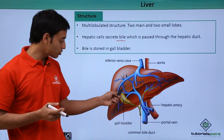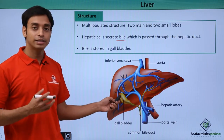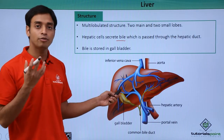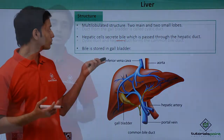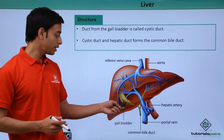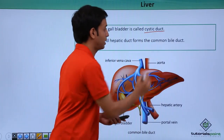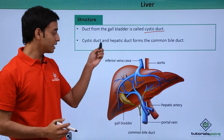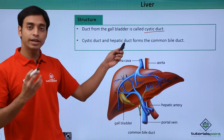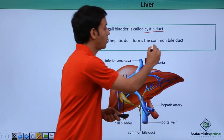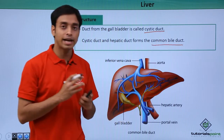The bile is stored in a structure called the gallbladder. The excess bile formed in the liver is stored in the gallbladder. The duct coming out from the gallbladder is known as the cystic duct. The cystic duct and the hepatic duct together form the common bile duct.